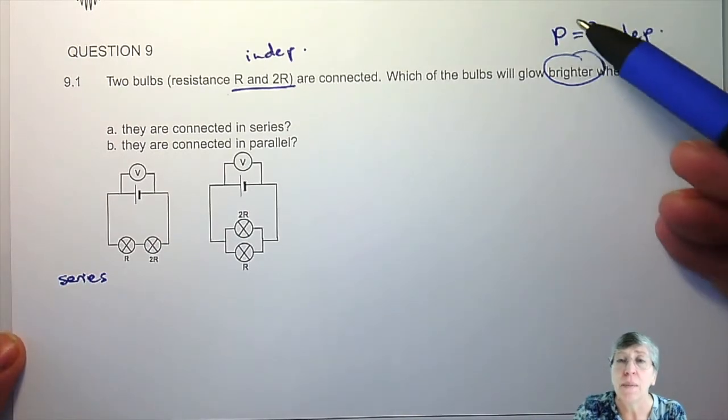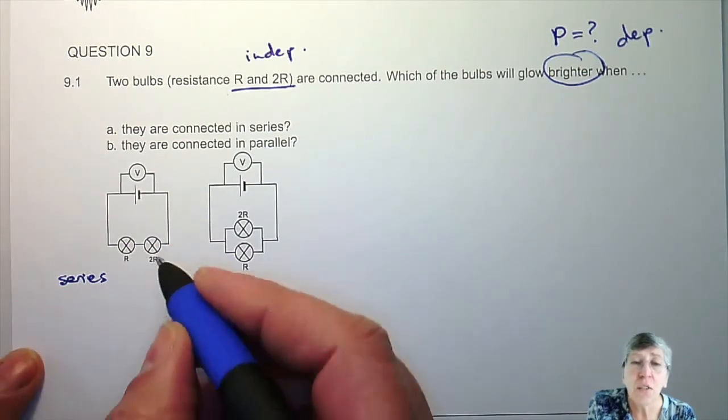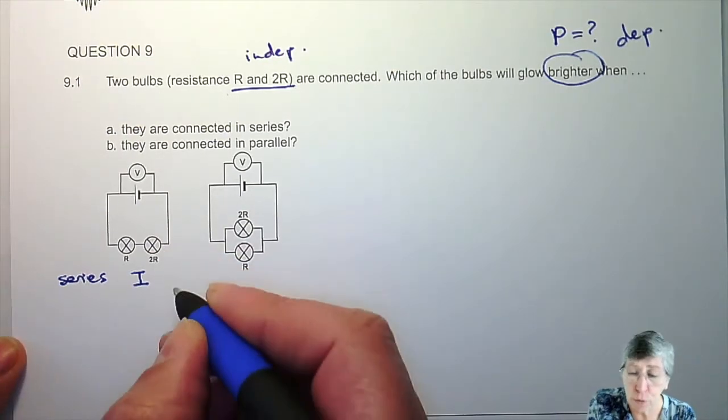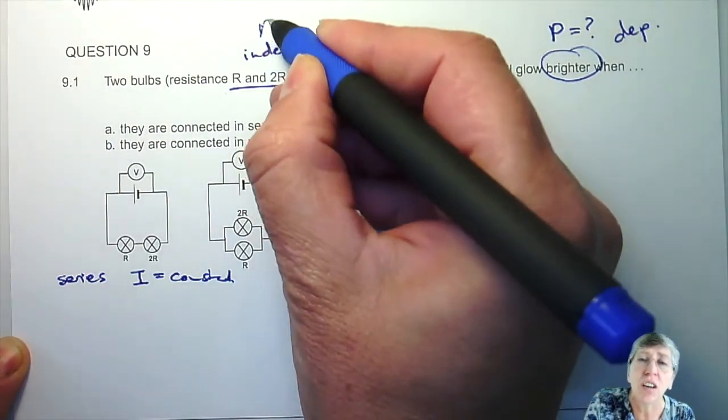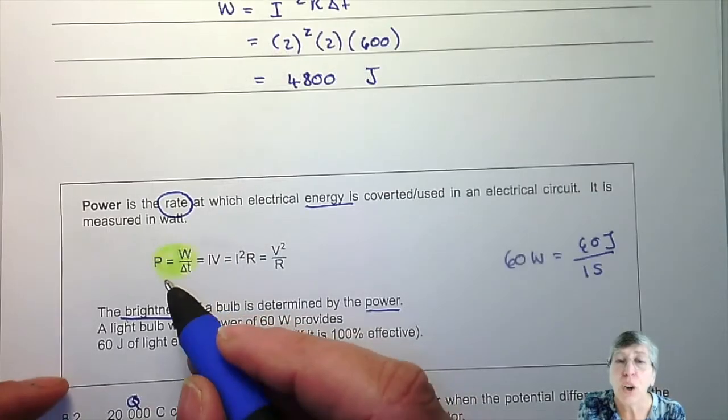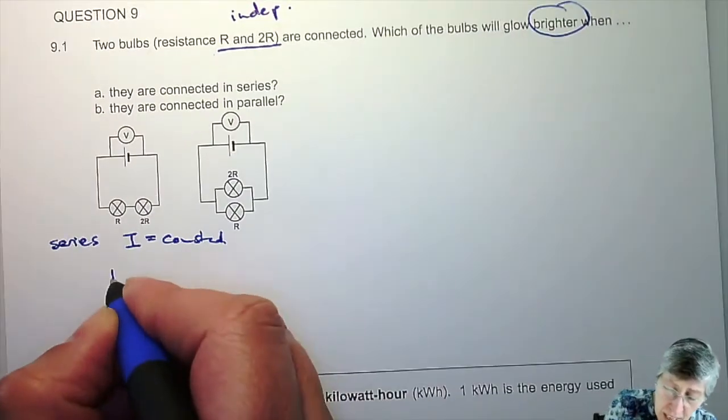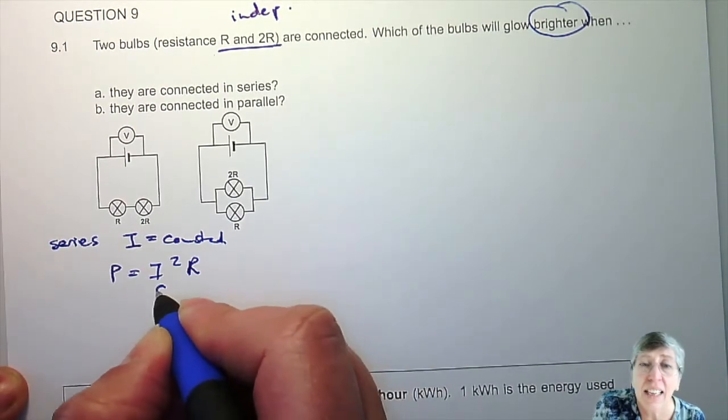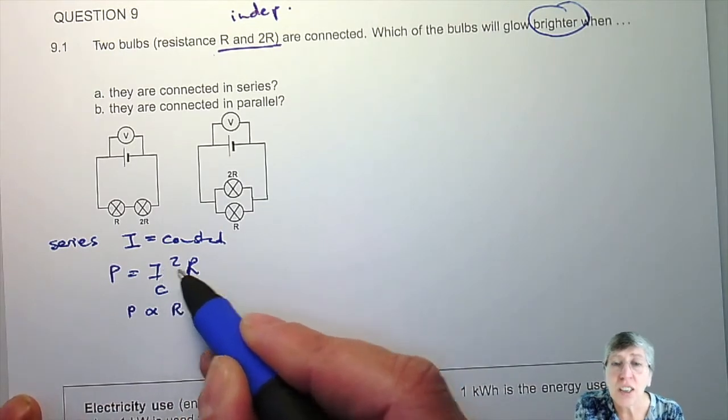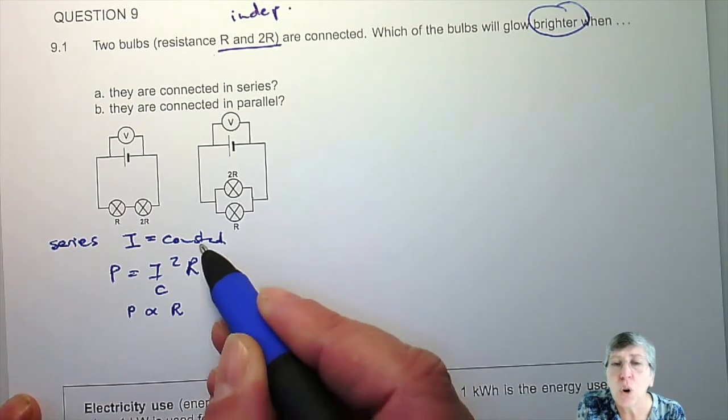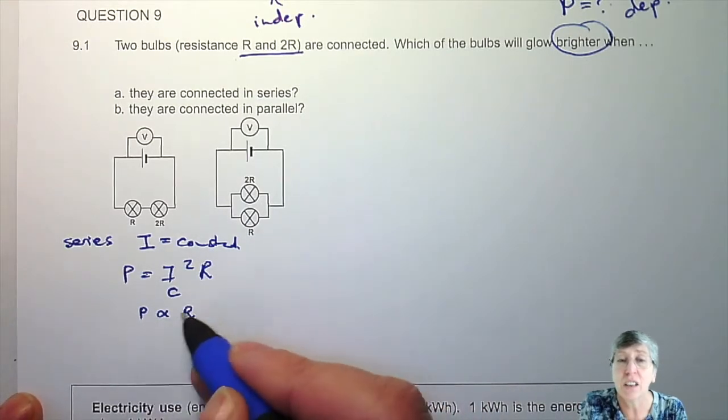And now when you look at this, remember all the other variables must be kept constant. Otherwise they will influence the power. So if you are in series what is constant? What is the same for things that are in series? In series the current is the same for both of them. So the current is my constant variable. And that means I'm going to look for an equation that's got R and P and I. If we look at the equations you had, P = I²R, I can use there. So P = I²R and now I is a constant. And if that one is constant it means P is directly proportional to R.